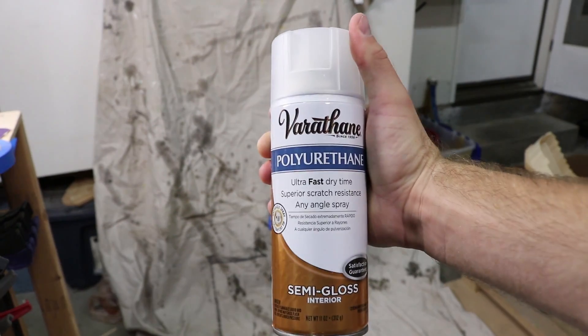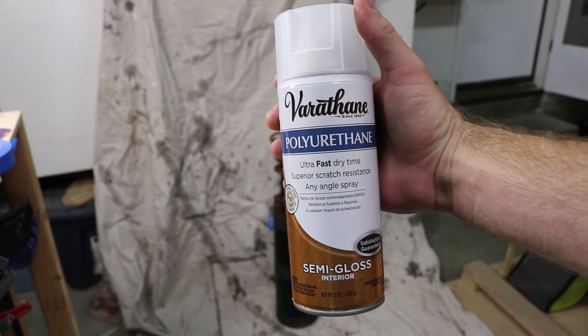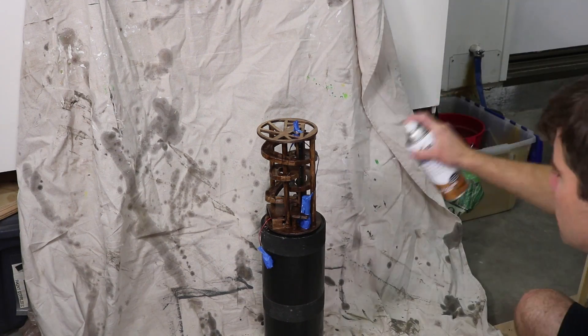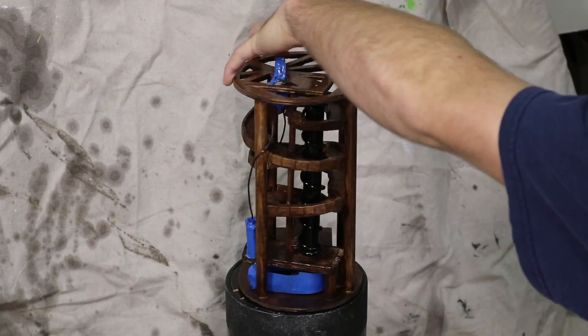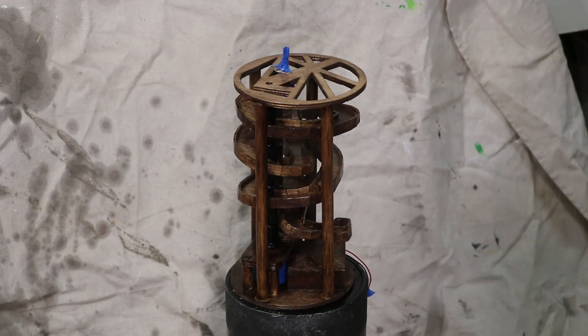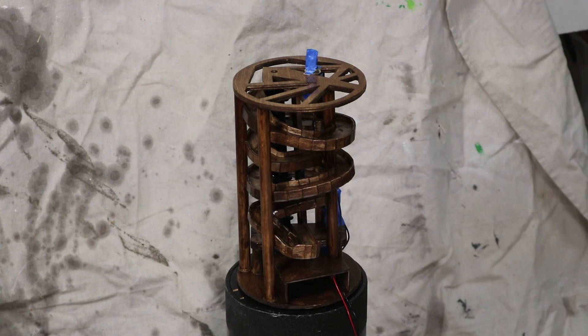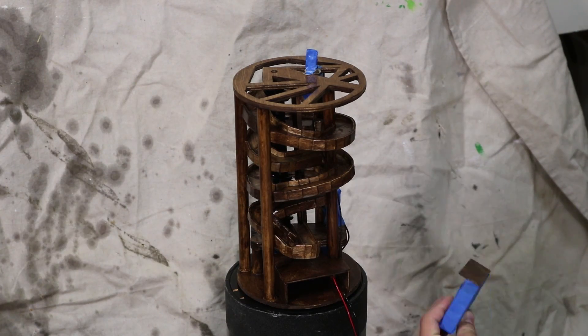To seal the machine, I used a semi-gloss polyurethane spray. It would be too hard to make sure all those nooks and crannies were covered using a paint-on product, so I opted for the spray. It also made things go quickly. I applied a few thin coats to make sure everything was properly covered.